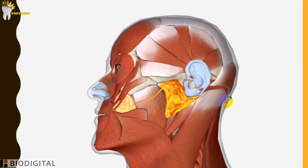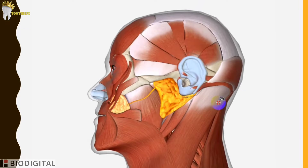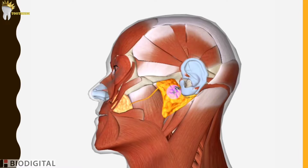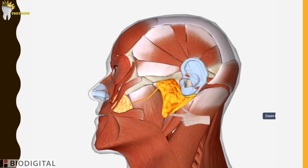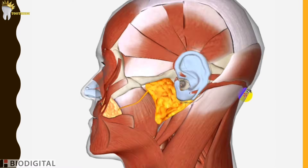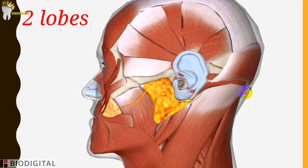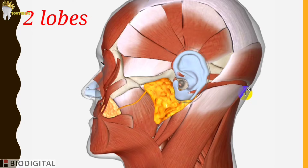Look at the shape of the gland. It is described as having an inverted triangular or pyramidal shape, as you can see that it tapers inferiorly to a blunt apex. This gland has two lobes — superficial and deep — and it is yellowish in color.